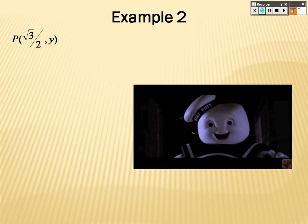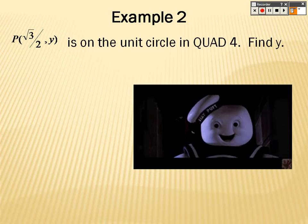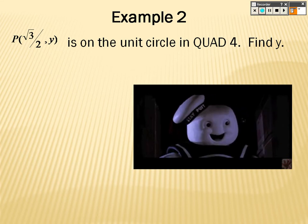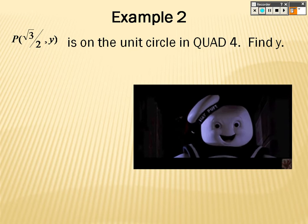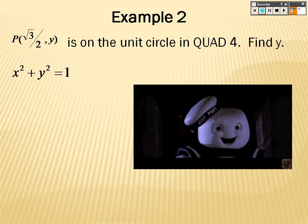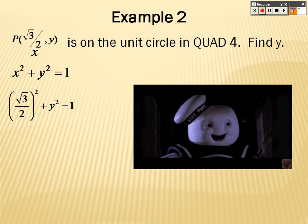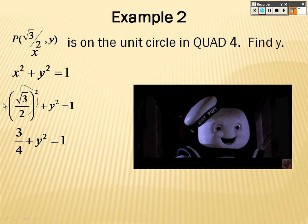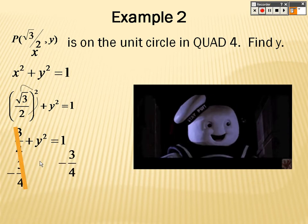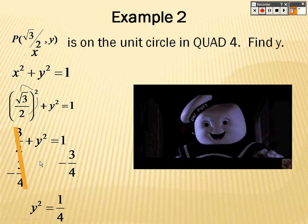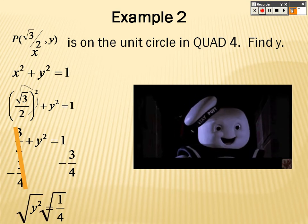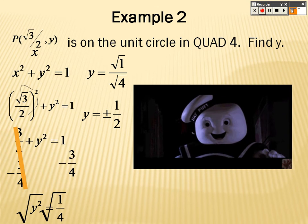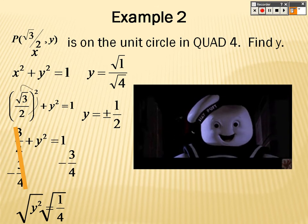In example 2, what we're saying is: what would y have to be in order for that point to be on the unit circle, but in quadrant 4? You plug in what you know for x, take the square through, so it's 3/4. To get y by itself, subtract 3/4 from both sides. So I get y² = 1/4. I square root both sides — square root of 1 is 1, square root of 4 is 2, but remember whenever you square root both sides, you get plus or minus. So it's ±1/2.